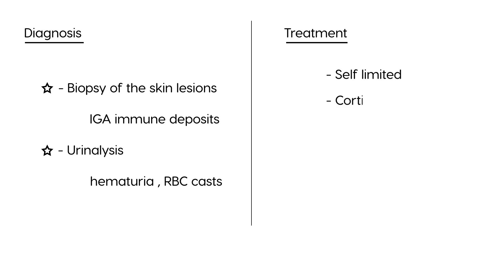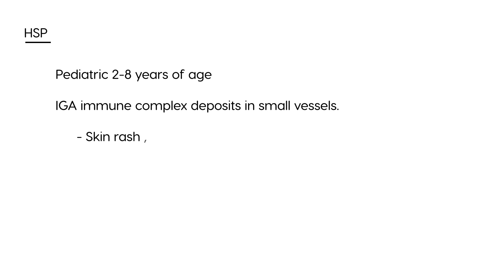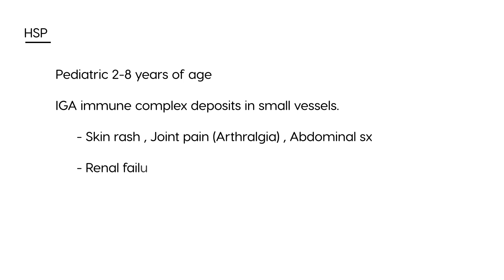Treatment: fortunately, HSP can be self-limited, meaning it can resolve on its own. For the most part, corticosteroids such as prednisone are given. To recap: HSP is a pediatric disorder in children two to eight years old, caused by IgA immune complex deposits in small vessels, producing rash, joint pain, abdominal symptoms, and potentially progressing to renal failure. Diagnosis uses biopsy and urinalysis; treatment is steroids.